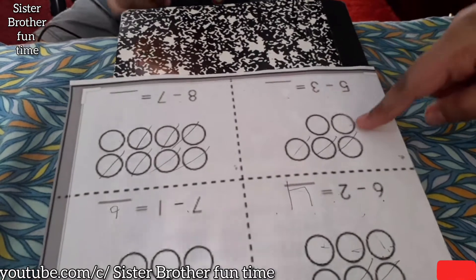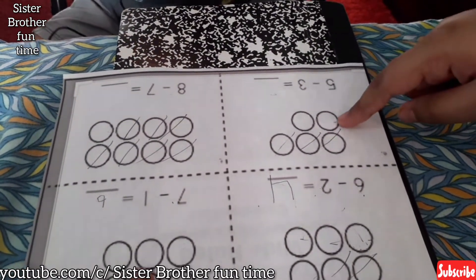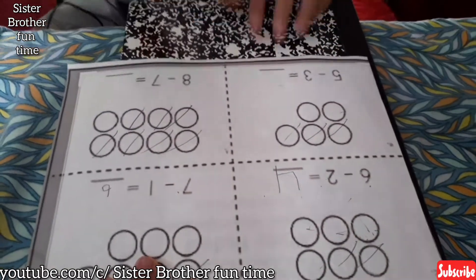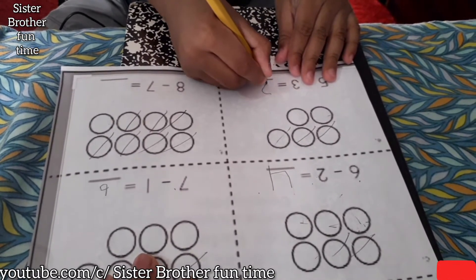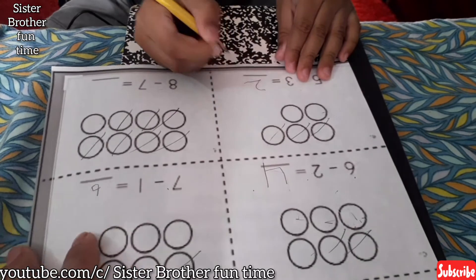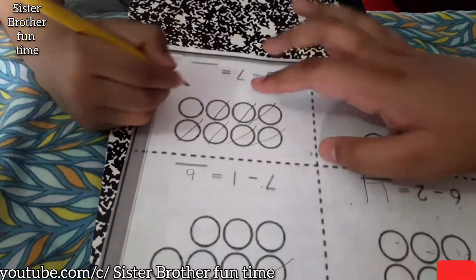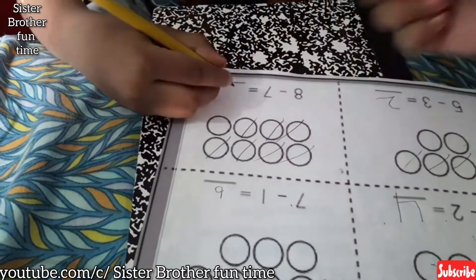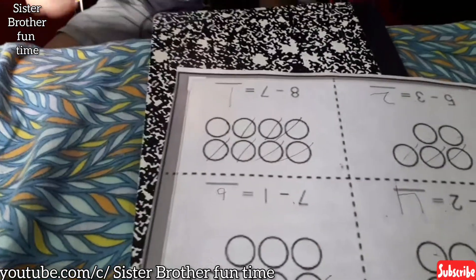Five minus three. How many? Count. Two. One, two. Okay, put two. Five minus three equals? Two. Good. Eight minus seven. How many are there? One. So eight minus seven equals? One. Good job.